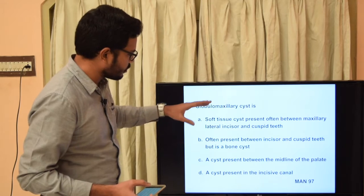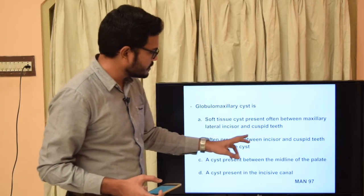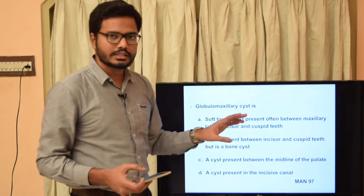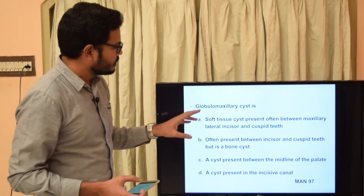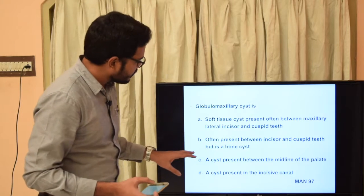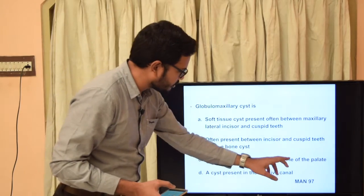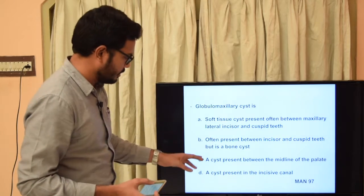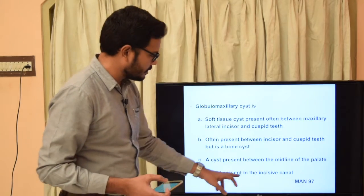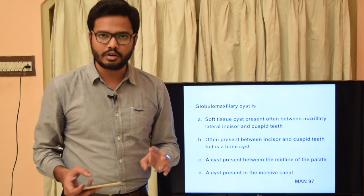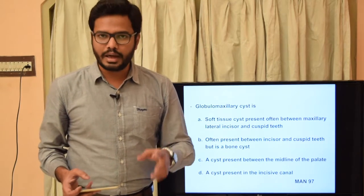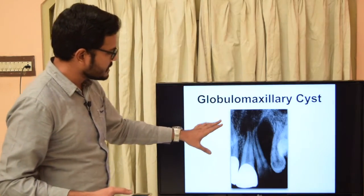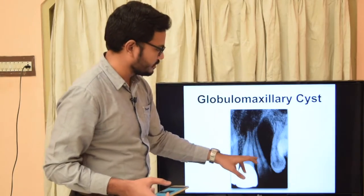Globulomaxillary cyst is a bone cyst, so we can rule out option A (soft tissue cyst). Option B — present between incisor and cuspid teeth and is a bone cyst — is correct, as seen on the radiograph it is clearly present between the maxillary lateral and the canine. Option C (midline of palate) is incorrect; option D refers to the incisor canal cyst, also called nasopalatine cyst or median anterior maxillary cyst.